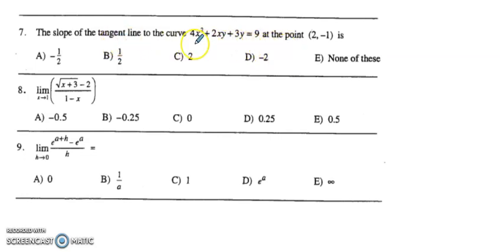They're asking us to find the slope of the tangent line at the given point, so we need to implicitly differentiate. To do that, we start with 8x, and then we need the product rule on the 2xy, so we have 2x dy/dx plus 2y.